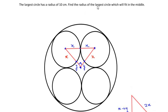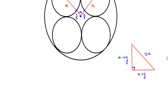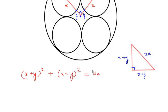Now we have to find y. Remember, we need to find the radius of the circle which fits in the middle, and y is acting as that radius. Using the Pythagorean theorem, because this is a right angle triangle, we can write: (x + y)² + (x + y)² = (2x)². The Pythagorean theorem states that the sum of the squares of the two legs equals the square of the hypotenuse, and 2x is acting as the hypotenuse here.